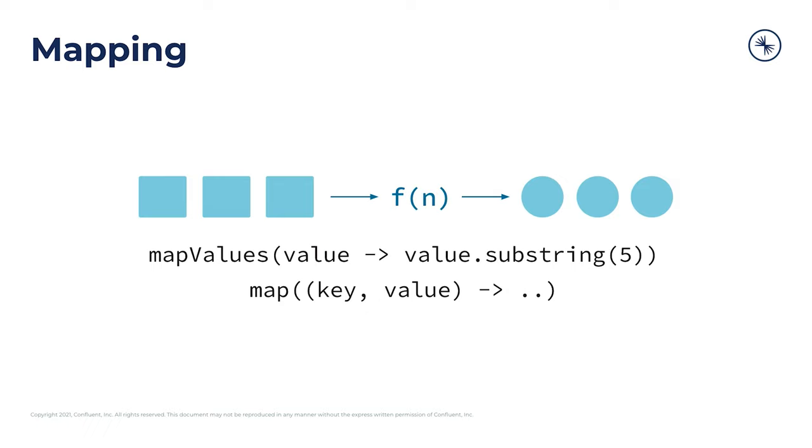All you need to do to map the values of this event stream is pass in something like this, where you take the substring and extract out the first five characters of your string. So this could be useful in the case you have some personal data, like credit card transactions, and you want to scrub out those first five characters in that string. Map values is the way to go for you.